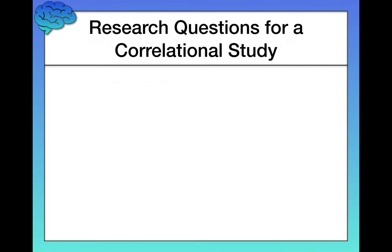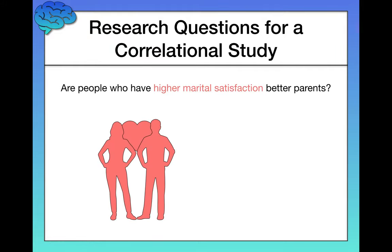Let's start by going over a couple examples of research questions someone might have that would be appropriate to address using a correlational research design. First of all, are people who have higher marital satisfaction better parents?